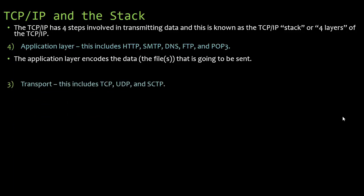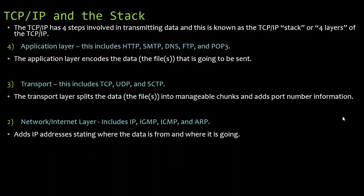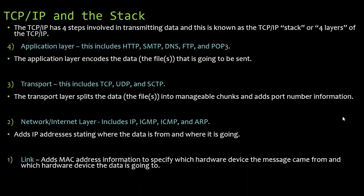Then we move to the transport layer — this is TCP, UDP, and SCTP. The transport layer splits the data into manageable chunks and adds port number information. Followed by the network layer, which is the IP protocol, and it adds IP addressing, stating where the data is from and where it's going.